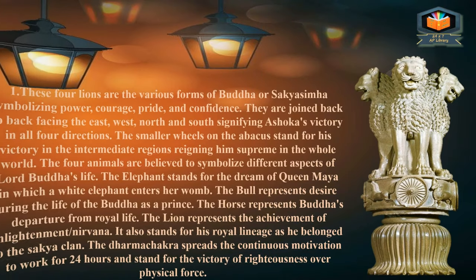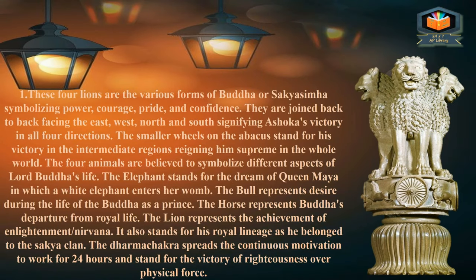The first interpretation: these four lions are the various forms of Buddha, symbolizing power, courage, pride, and confidence. The four lions are placed in four directions to represent Ashoka's victory in all four directions — that is what they symbolize. The smaller wheels on the abacus stand for his victory in the intermediate regions, reigning him supreme in the whole world.